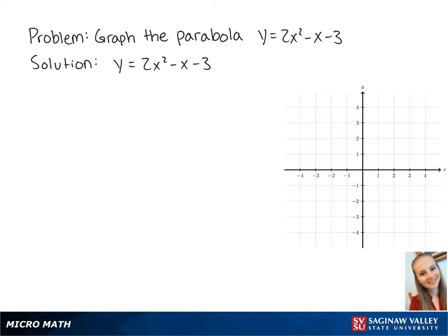For this problem, we want to graph the parabola of the equation y equals 2x squared minus x minus 3. First, we want to find the coordinates of the vertex.